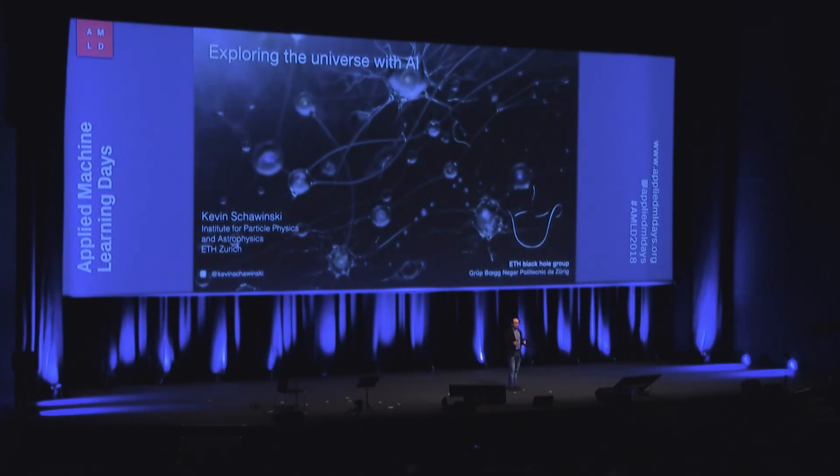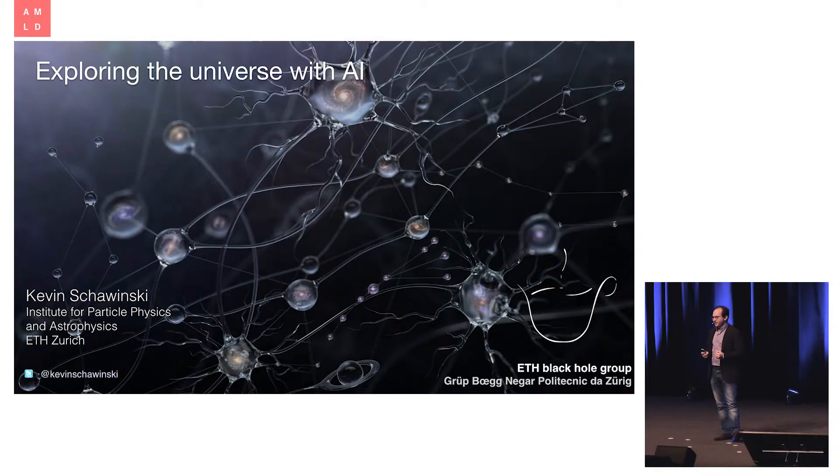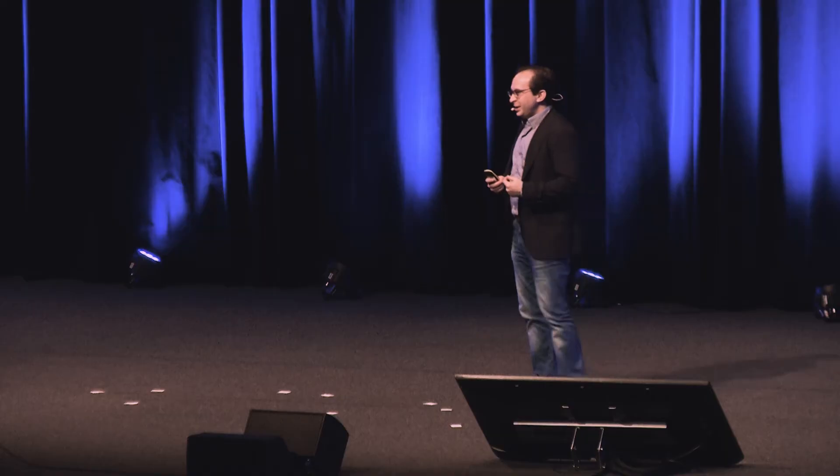I've gotten used to giving this talk to an audience of astrophysicists, extolling the virtues of using artificial intelligence and machine learning in our research. So now I have the inverse problem. I want to convince you that actually astrophysics is a really cool area of application for machine learning.